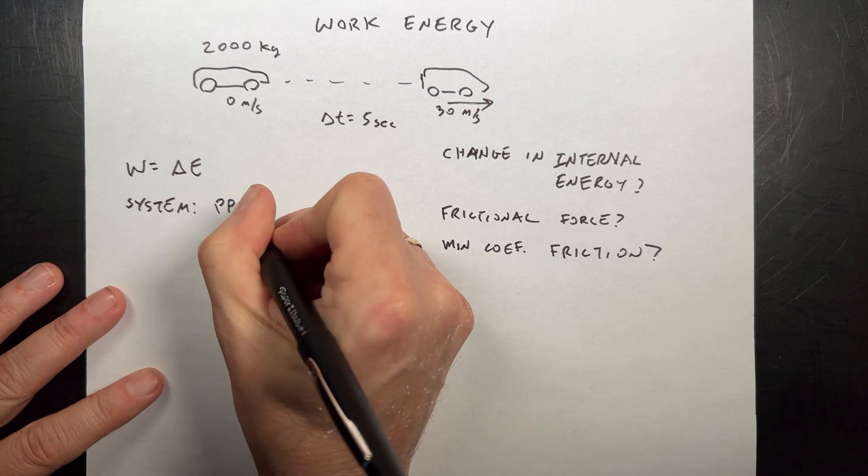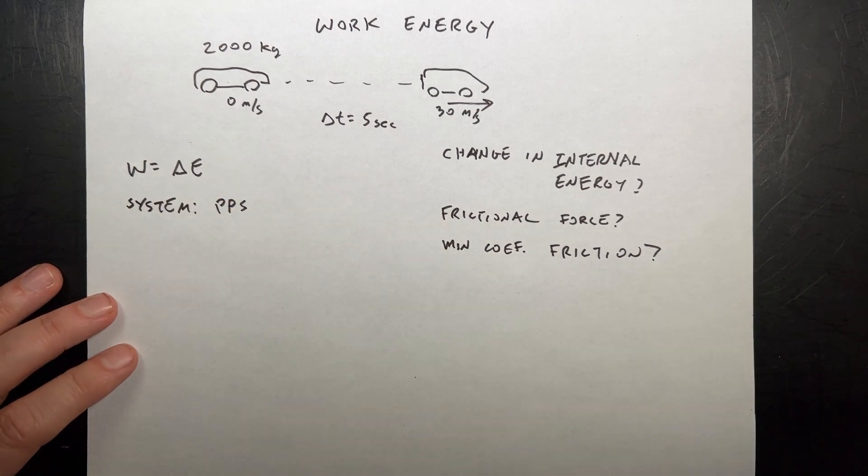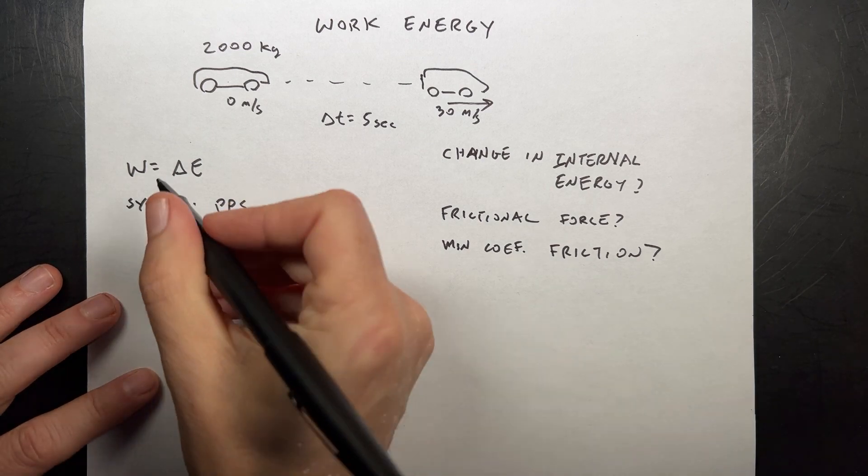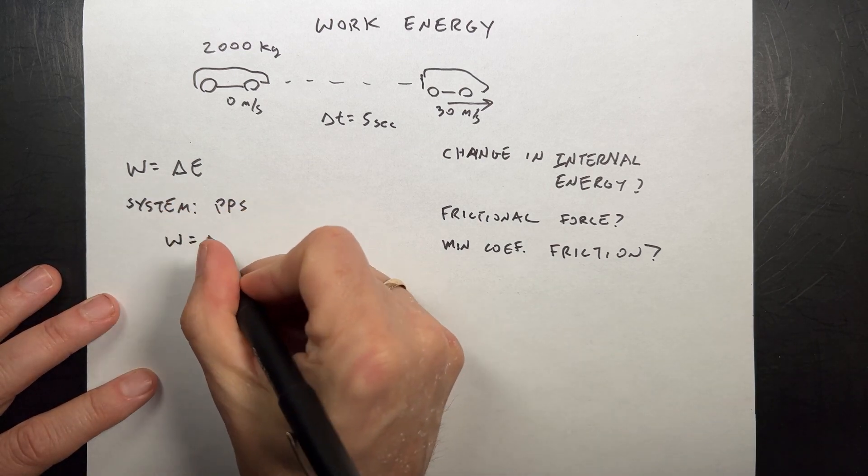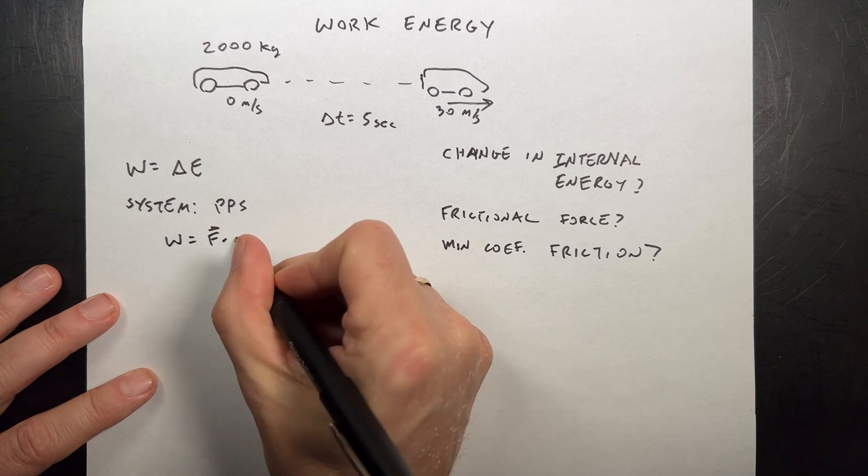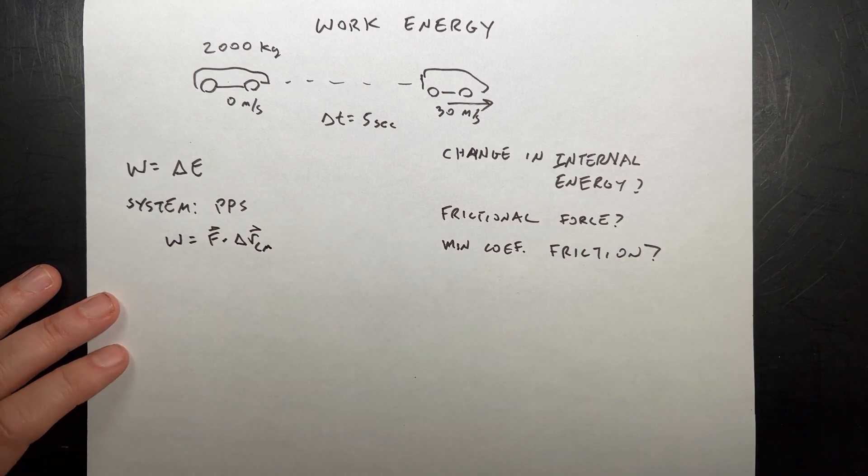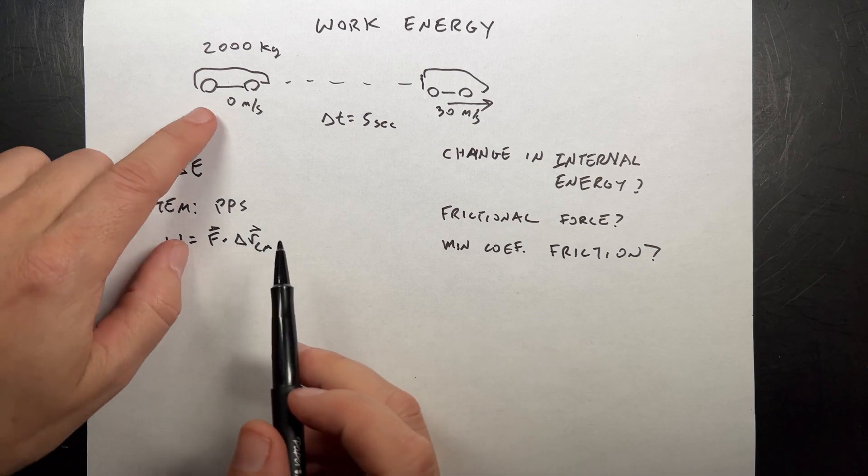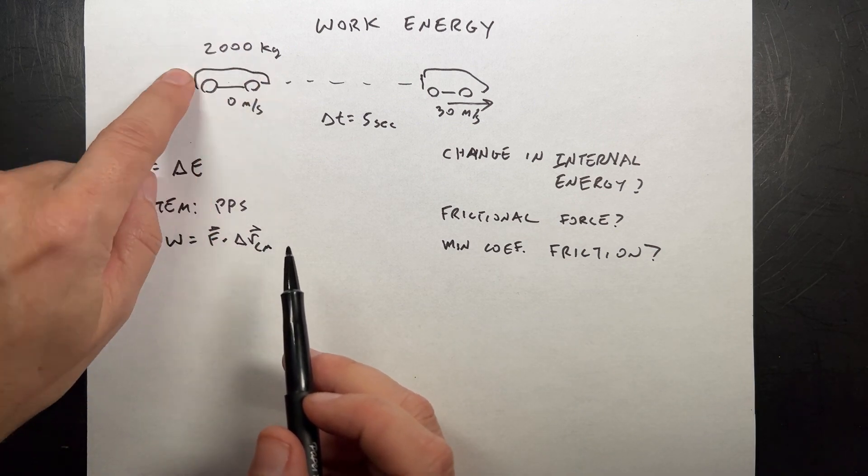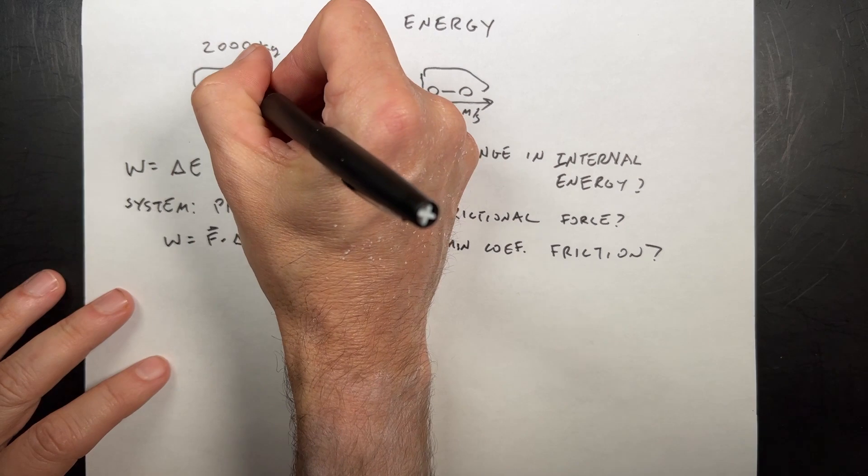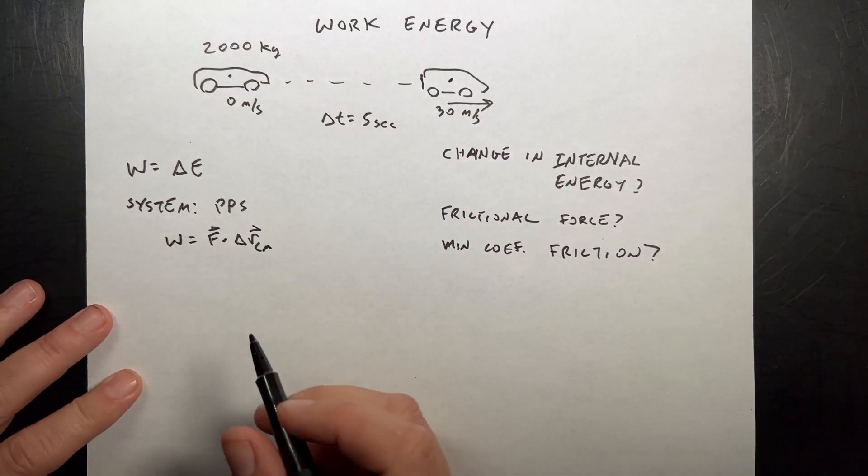In this case, I'm going to pick the point particle system of the car. And this is kind of important. Because in the point particle system, the work done is the force dot the displacement of the center of mass. And I don't really care about where those forces are. I'm just going to look at the center, treat this as a point. And that makes it much easier.